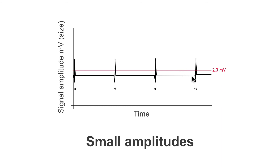Again, we can see that the amplitude size has also improved. Before we were just marginally over 2 millivolts, and now we can see these ventricular signals are much greater than the 2 millivolts that the ventricular sensitivity is set to. This will put your mind at rest that the pacemaker will continue to function normally.